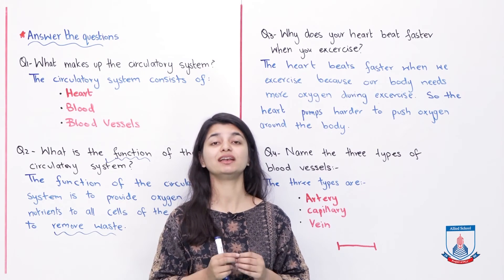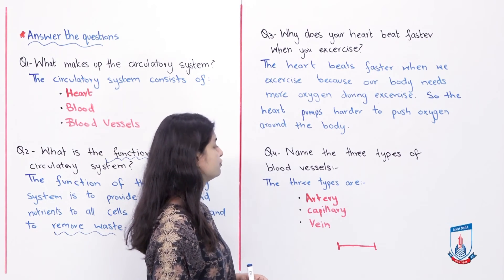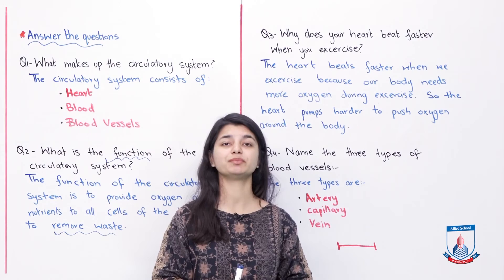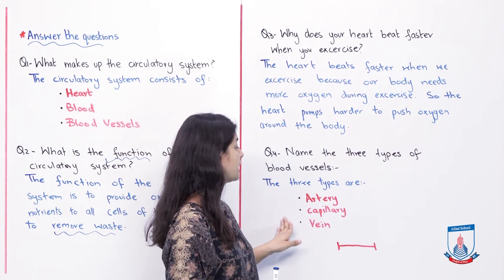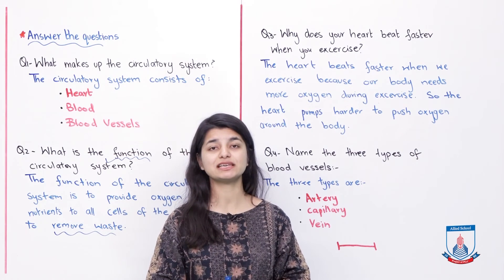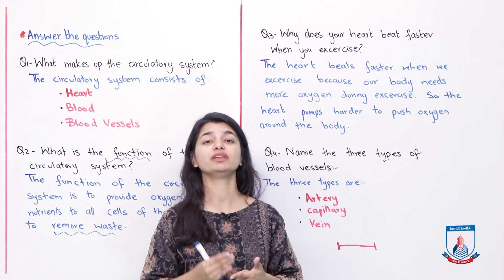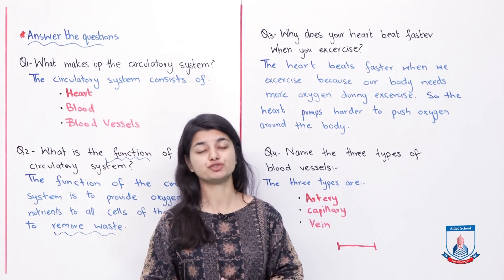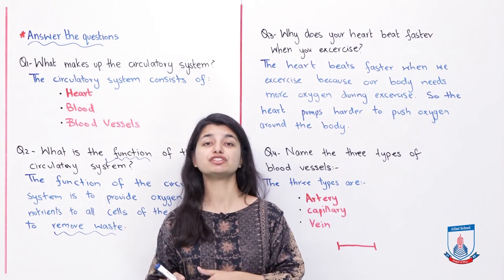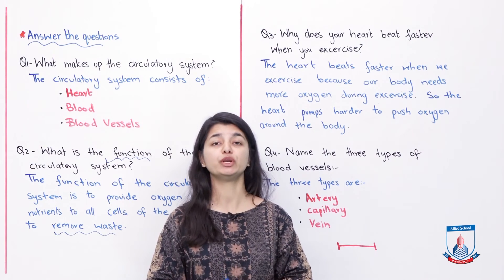Question number 4, and the last question for this sub-topic about the circulatory system: Name the three types of blood vessels. The answer is very simple and to the point. The three types are artery, capillary, and vein. Artery is the most thick and the most big. Then there is the vein. And the capillary is the most small. In the next lecture, you can learn the purposes of each.